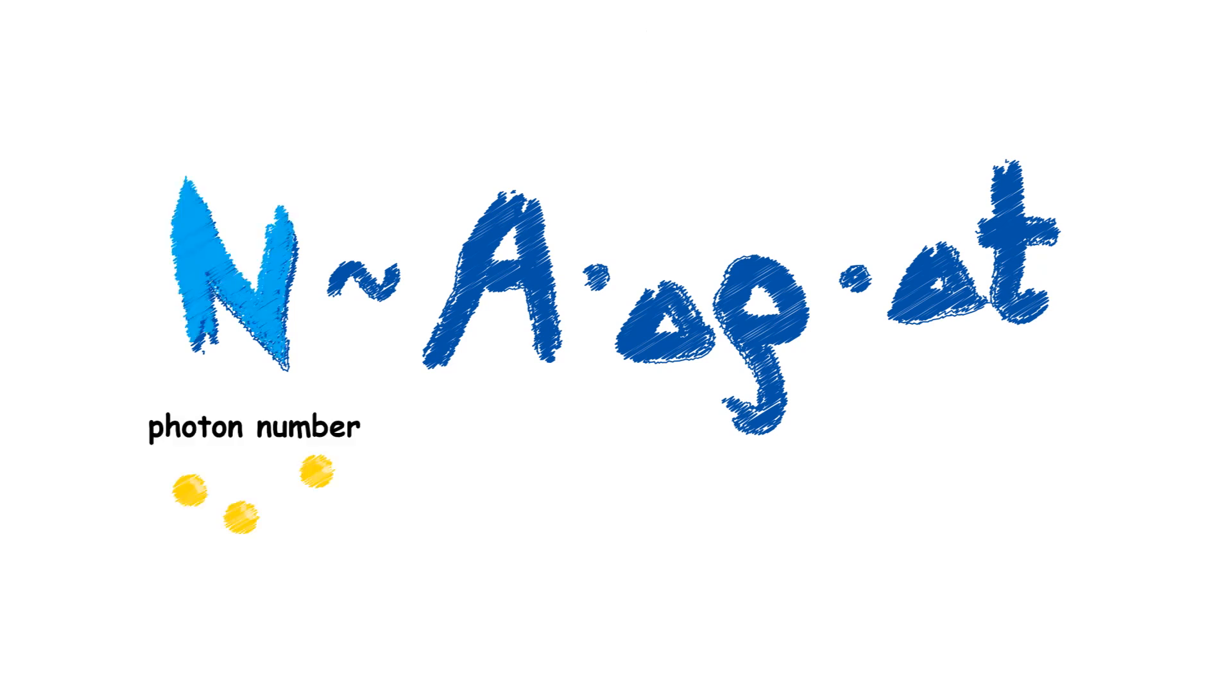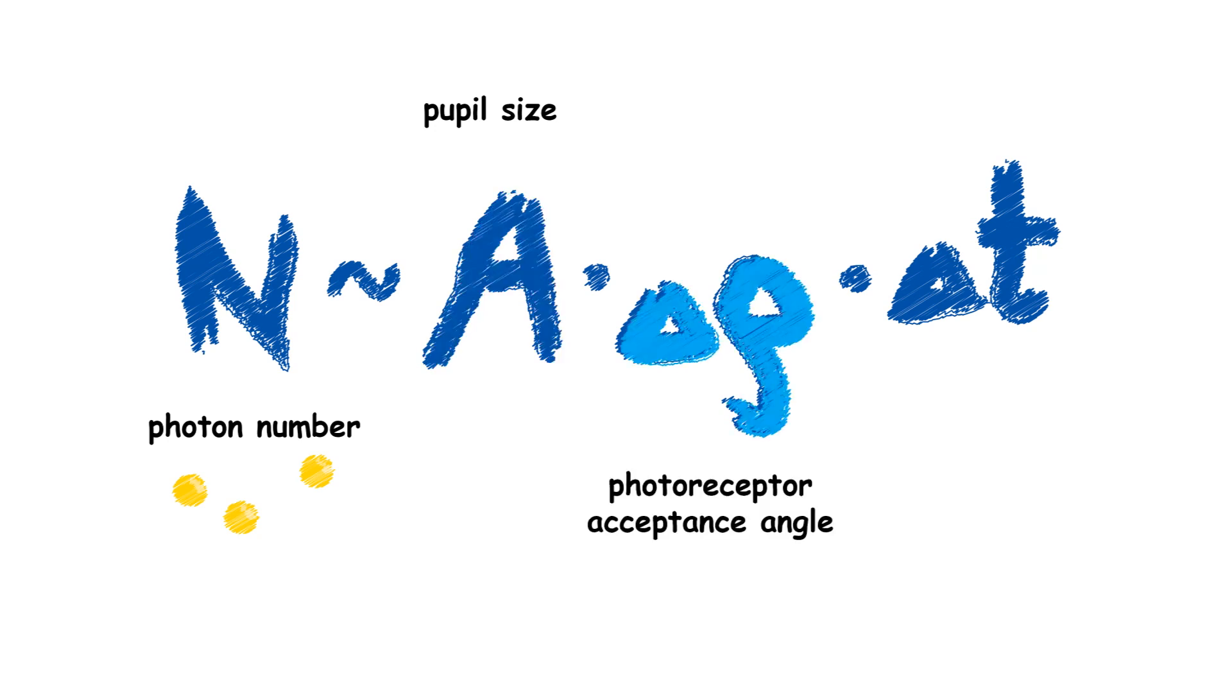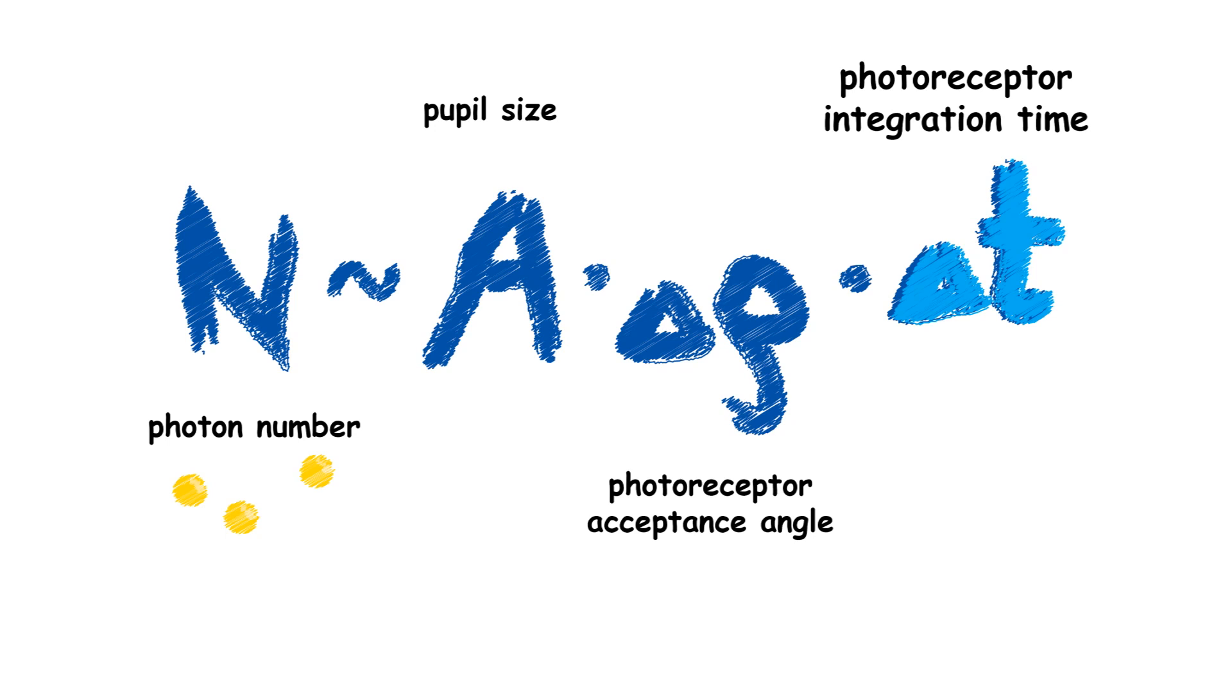The number of photons ultimately depends on the size of the pupil of the eye, the photoreceptor acceptance angle, and the integration time of the photoreceptor.